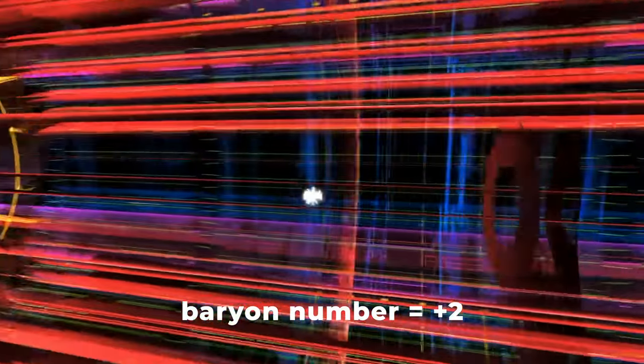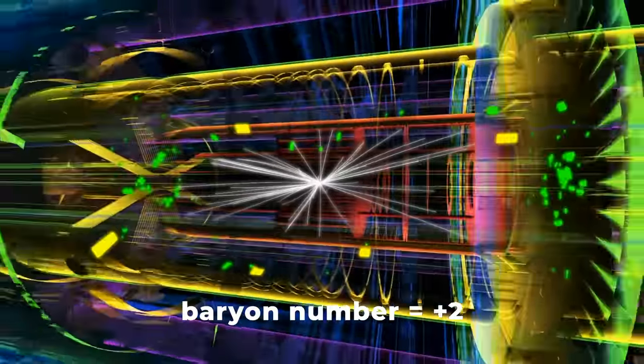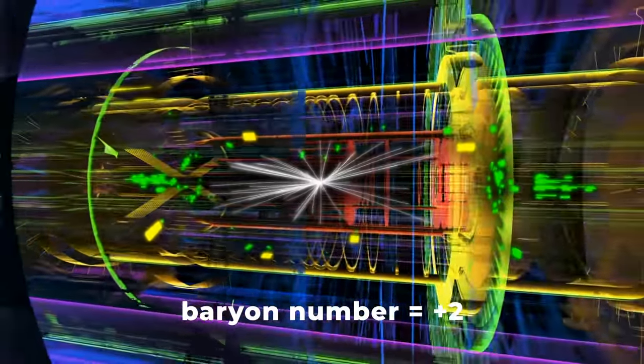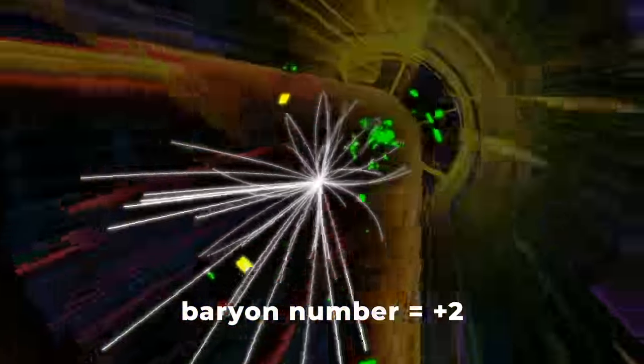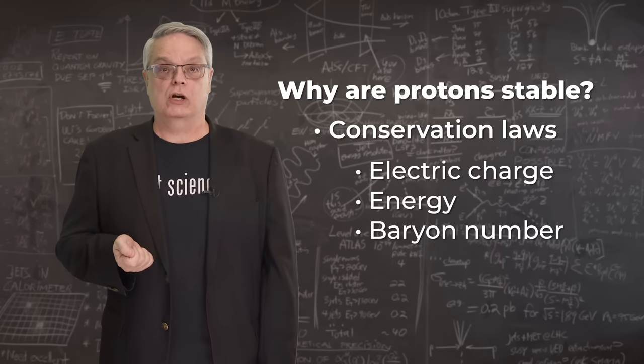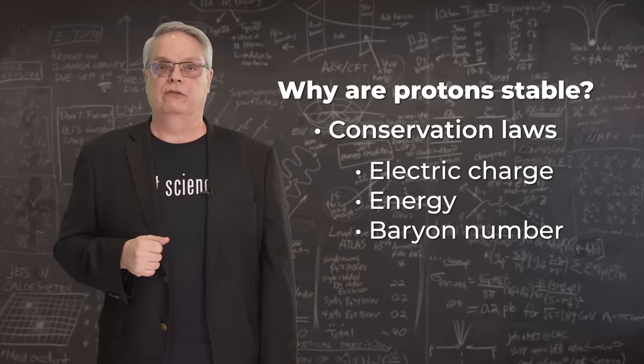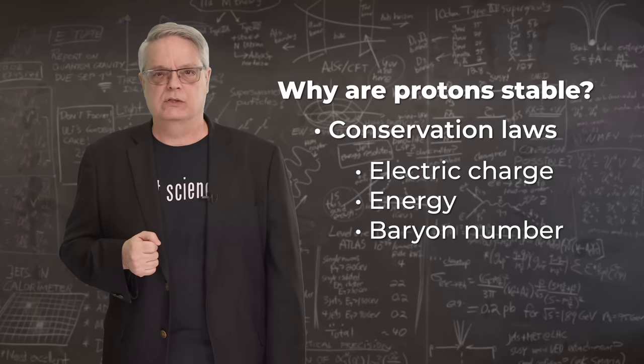After the collision, no matter how messy and complicated, the baryon number is still plus two. So, there have to be two baryons wandering around somewhere in the debris. According to the standard model, baryon number, electric charge, and energy are all conserved. There are many more conserved quantities, but let's just focus on these three.